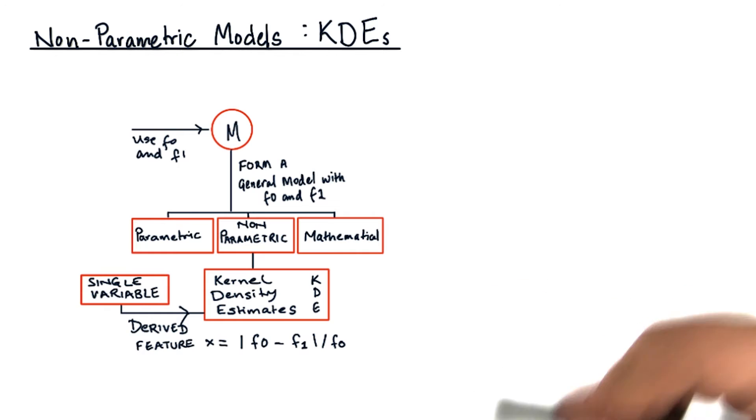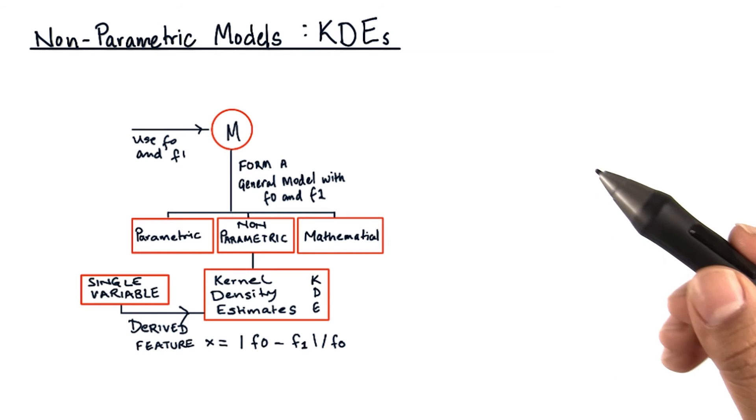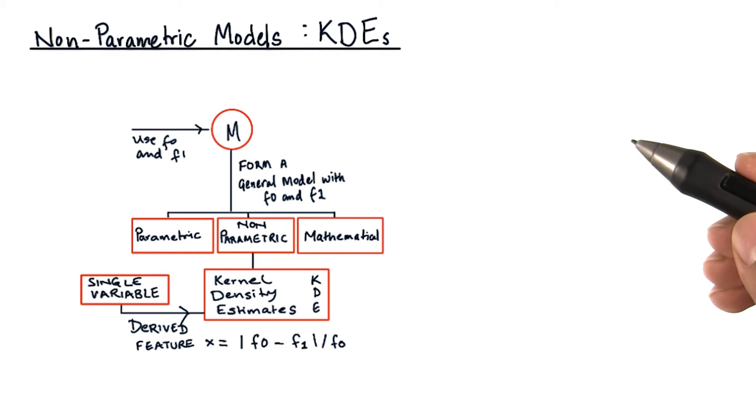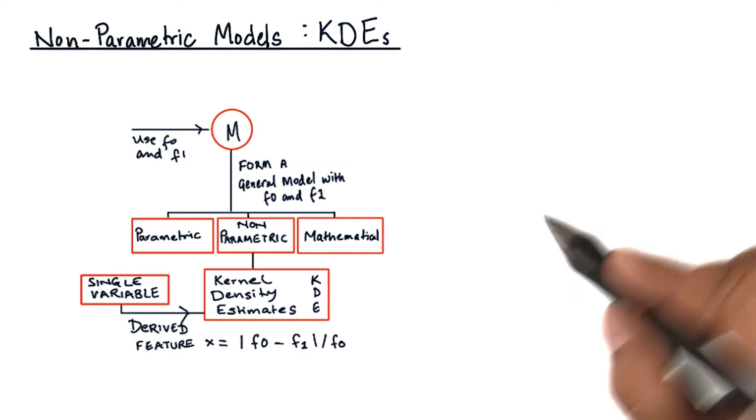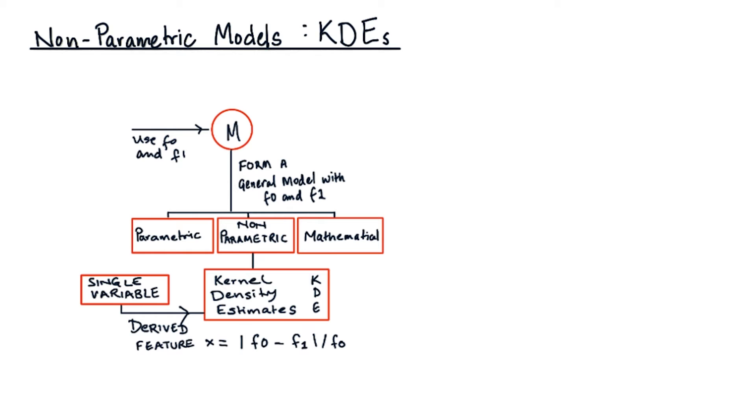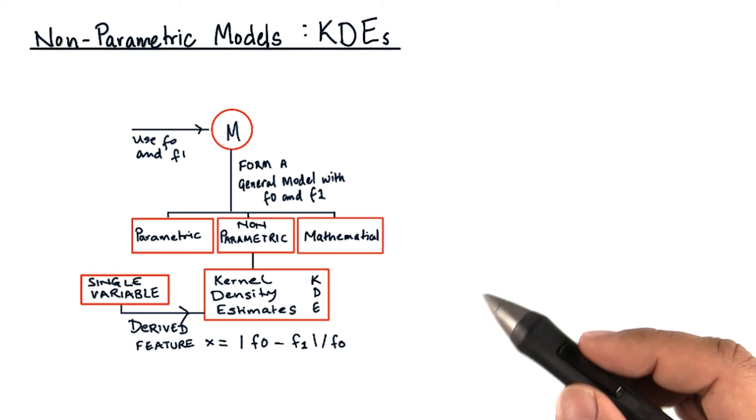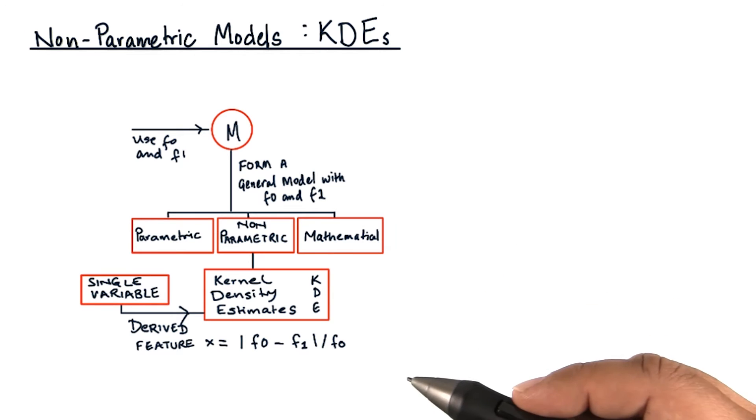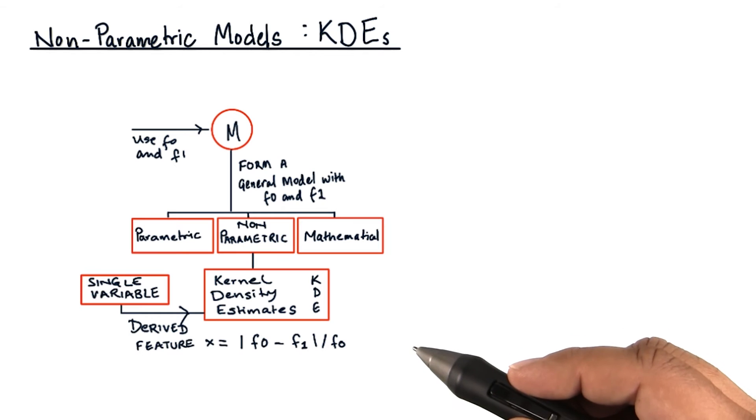And in the next few videos, we are going to see how to do this. Non-parametric models are extremely useful to get from discrete data to probability density functions or distributions. For example, it is useful in signal processing, in online data collection to build quick models, and in several other fields.